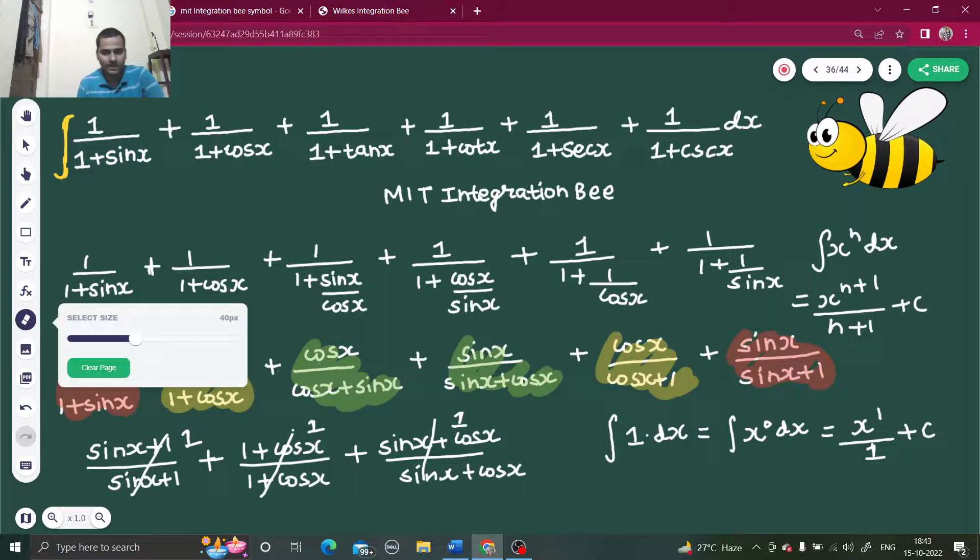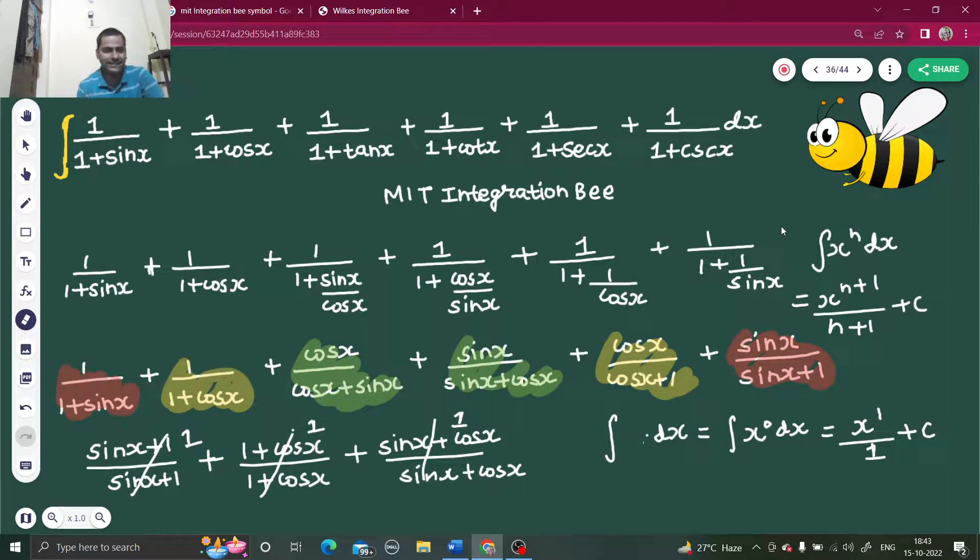A big blunder after doing everything correctly. This will be 3 dx. 3, because it is a constant, I can take this out. So 3 times x by 1. You are simply getting 3x plus c as your final answer.